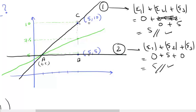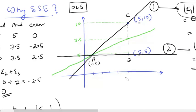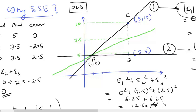If we instead minimize the sum of squared errors — which is what ordinary least squares does — we always get one single line as the answer, removing all confusion. For example, calculating the sum of squared errors for the green line: e1 = 0, e2 = 2.5, e3 = 2.5, so we get 0 + 6.25 + 6.25 = 12.50. This unique solution is why we use sum of squared errors in linear regression.